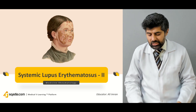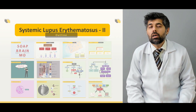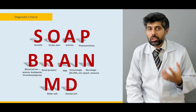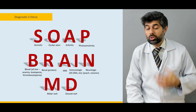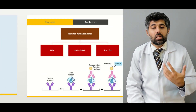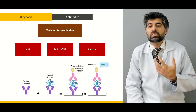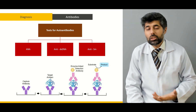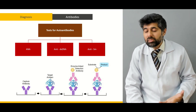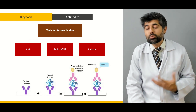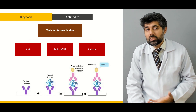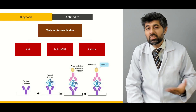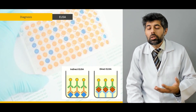In this lecture outline, we will first study the diagnostic criteria — how to diagnose SLE and what the mnemonic for it is. Then we learn about its diagnosis through autoantibodies: which antibodies are used, what their specificity is, and how specificity helps us in making the choice for antibody selection.